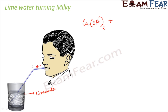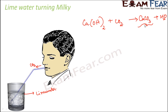This happens because when carbon dioxide is added to the solution, it reacts with calcium hydroxide to produce calcium carbonate (CaCO₃) plus water. Due to the formation of calcium carbonate, the lime water turns milky — calcium carbonate is also a constituent of marble.